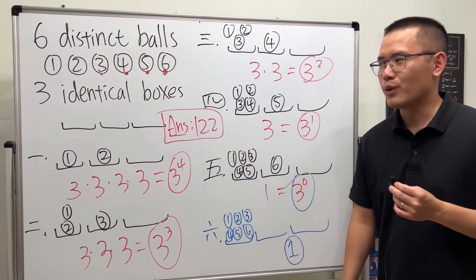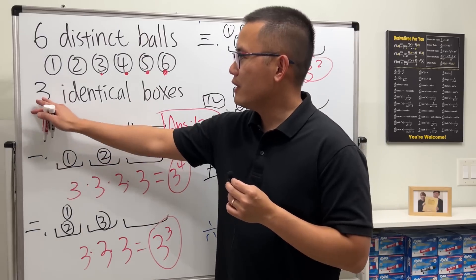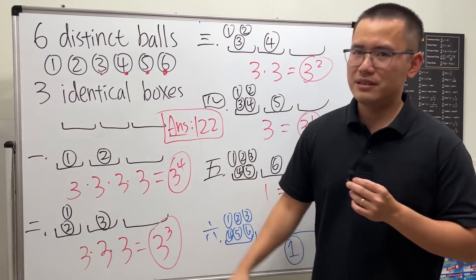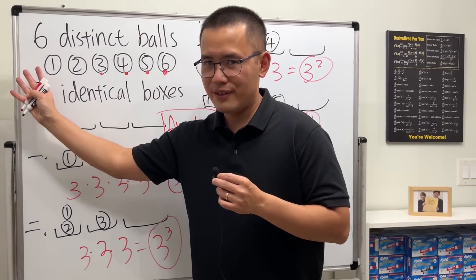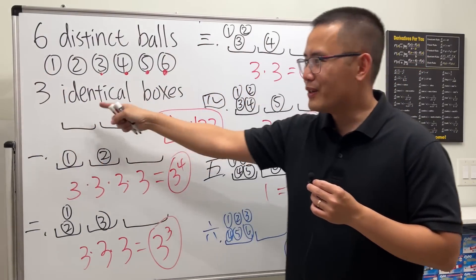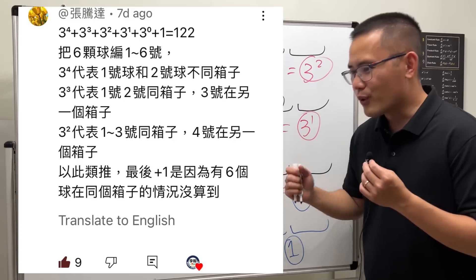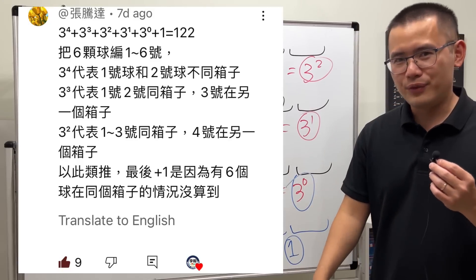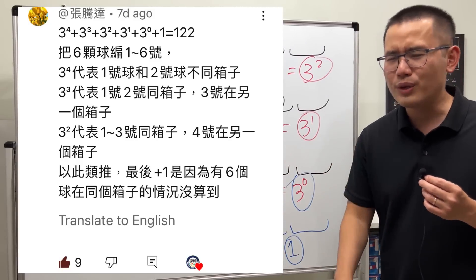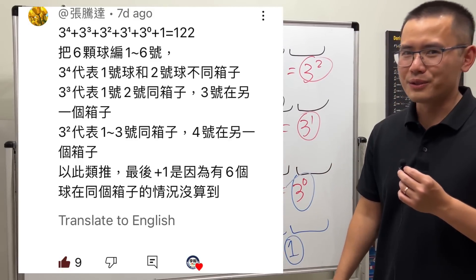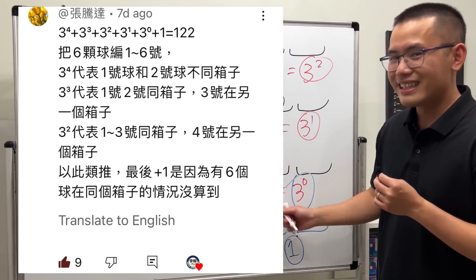Now you might know what I'm going to ask next: what if instead of three identical boxes, we have four? Go ahead and try to figure that out. And at the end, I want to thank the viewer who suggested this solution — Duchuan, so wonderful and nice, thank you so much!